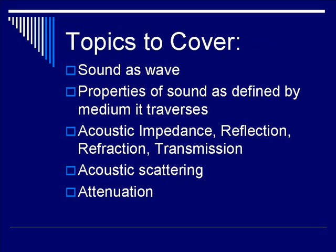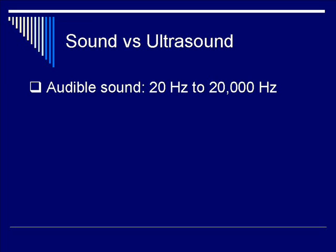We'll discuss what can be done to compensate for this phenomenon. The entire sound spectrum consists of infrasound, audible sound, and ultrasound. Audible sound ranges in frequency between 20 Hz to 20 kHz, which is what we experience during normal living. Ultrasound is defined by any sound wave with a frequency over 20 kHz, regardless of orientation.